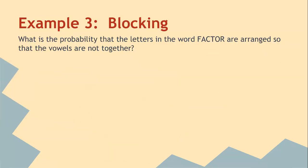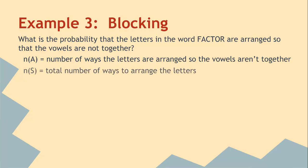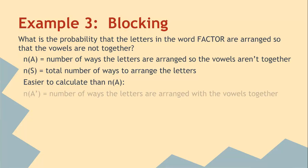What is the probability that the letters in the word FACTOR are arranged so that the vowels are not together? n(A) is the number of ways to arrange letters so the vowels aren't together. n(S) is the total number of ways to arrange the letters. What's easier to calculate than n(A) is n(A'), which is the number of ways the letters are arranged with the vowels together.